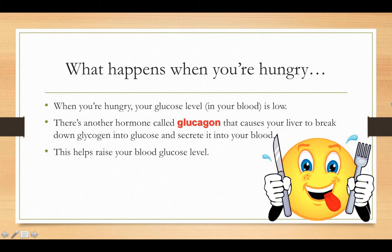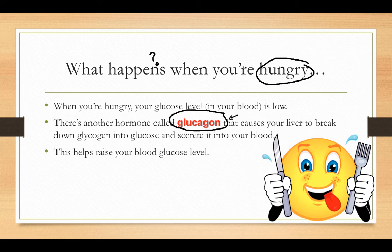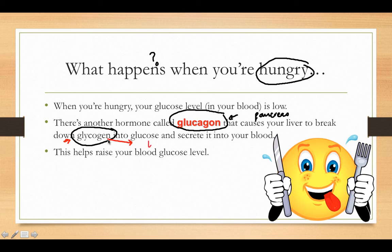What happens when you're hungry? When you're hungry your glucose level is low — like when you wake up in the morning and break that fast. There's another hormone called glucagon, also made by the pancreas. Glucagon causes your liver to break down glycogen and turn it into glucose. I know all these words sound the same — you get the three G's: glucagon, glycogen, and glucose. This in turn helps raise your blood sugar levels.